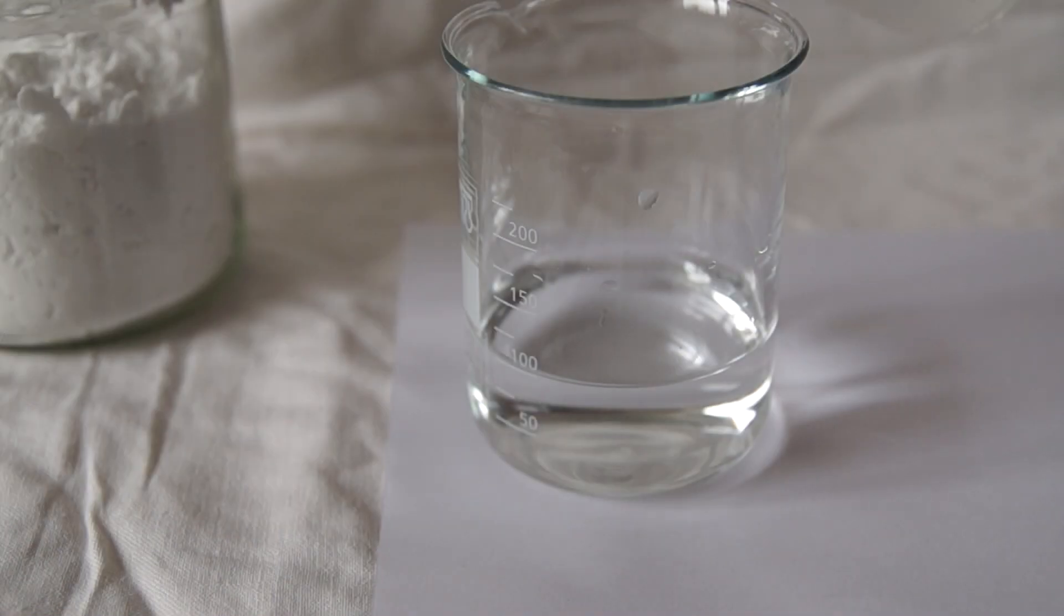Next, pour starch solution to the first solution, where we have a mixture of potassium iodide and sodium thiosulfate.